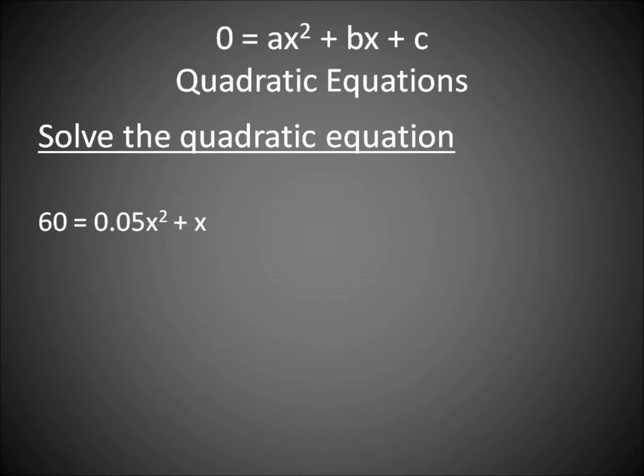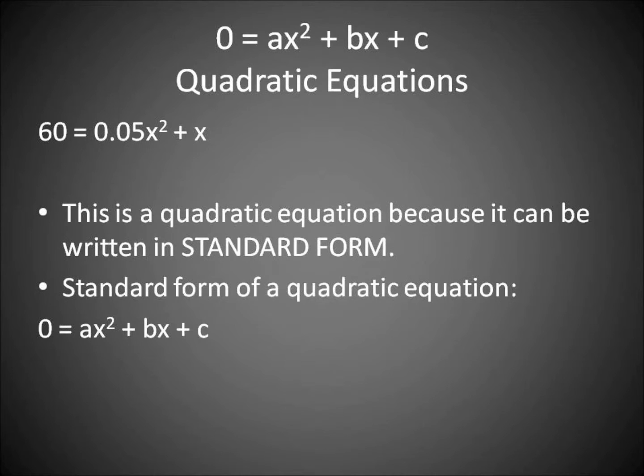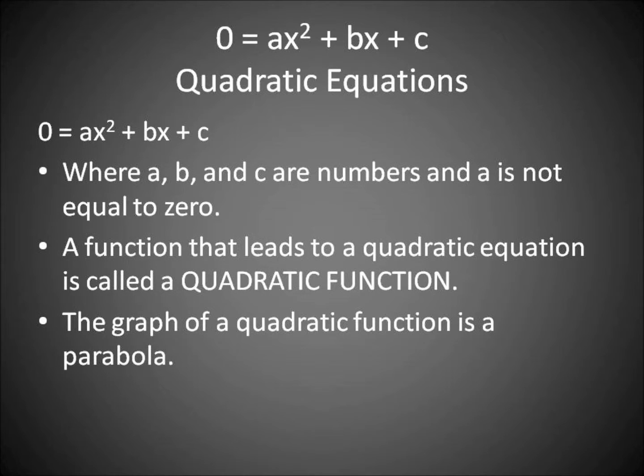We're going to use 60 equals 0.05x squared plus x. This is a quadratic equation because it can be written in standard form. The standard form is zero equals ax squared plus bx plus c, where a, b, and c are numbers and a is not equal to zero.